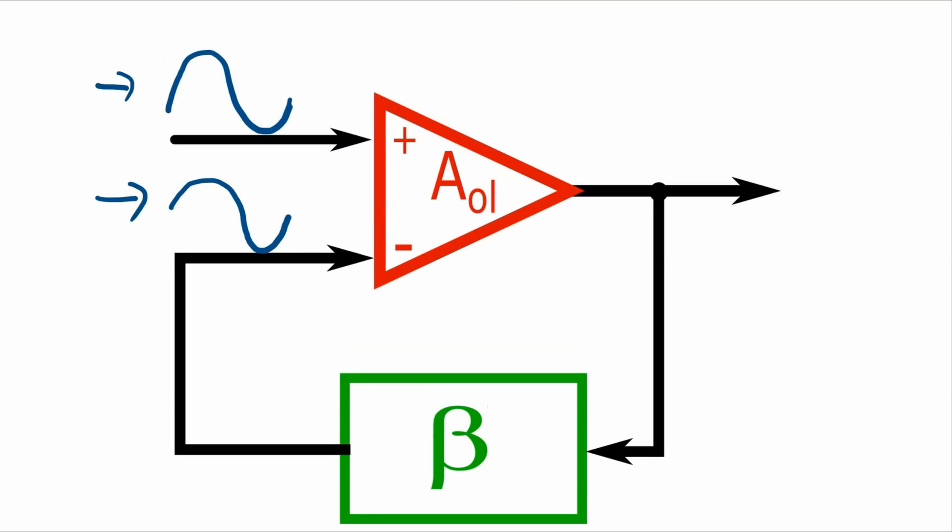So you may well be thinking, if I'm not purposely phase shifting the feedback signal, I will always be feeding back an in phase voltage or current. Therefore, I will always have negative feedback. Unfortunately, even if you don't purposely phase shift the signal, your system will do it for you.